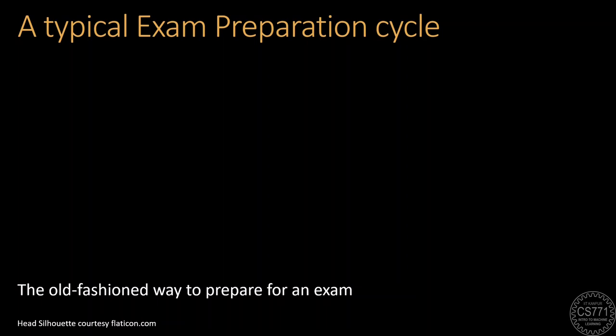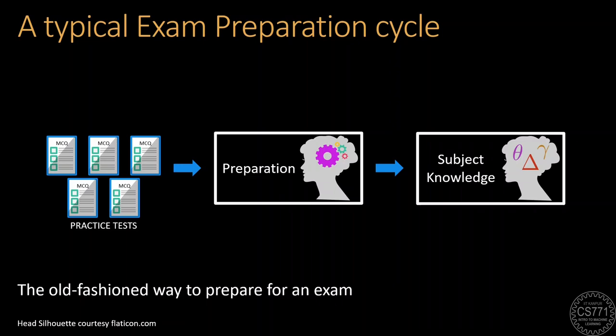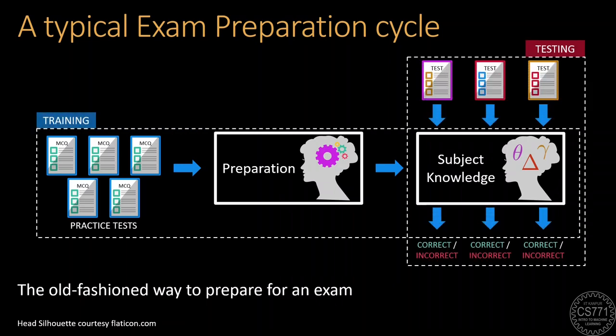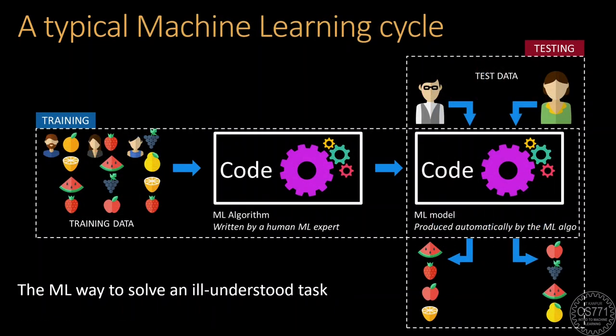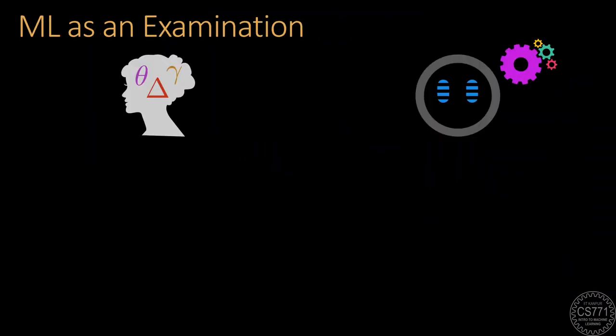Now having discussed about features and models and loss functions I want to take a step back and look at the big picture. Think about how you as a student prepare for an exam. You usually take a lot of practice tests, prepare using those practice tests and gain subject knowledge about the exam and then in the actual exam you are able to take the questions and hopefully answer them correctly. Notice the uncanny similarity between this process and the process by which machine learning works. It is no surprise then why these steps are called training and testing in machine learning. However, this exam preparation analogy actually has a lot more to tell us about how we should behave when doing machine learning.